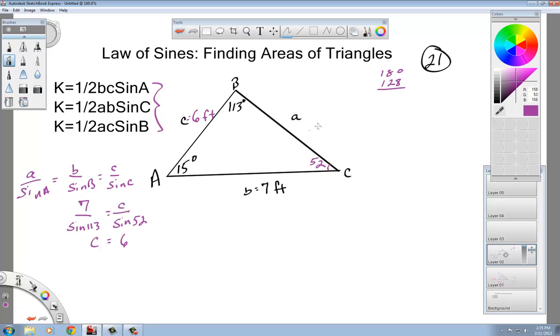I suppose you could solve for a here too, and do it another step, and then use any of these you want. But let's go ahead and just stick with this one, because I have a, b, and c. So get a different color here. I'm going to use this top one right there, and say K equals one half b c sine capital A. I'm going to plug everything into that.